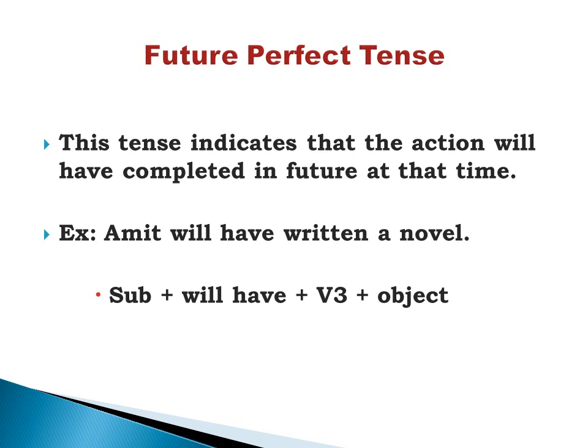Future perfect tense indicates that the action will have been completed, or will be over, in the future at that time. Example: Amit will have written a novel. Formula: subject + will have + V3 + object. We need to remember there is no change to 'will have' — it does not become 'will has' — because future tense makes use of only 'have' and never 'has'.